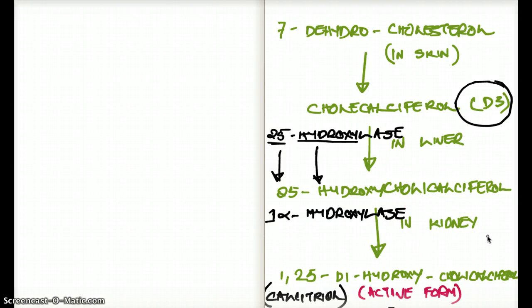25-hydroxycholecalciferol then travels from the liver all the way to the kidney. In the kidney, there is an enzyme called 1-alpha-hydroxylase, which is going to convert our 25-hydroxycholecalciferol to 1,25-dihydroxycholecalciferol. 1,25-dihydroxycholecalciferol is also called calcitriol. That is the active form of vitamin D. That is the form of vitamin D we need for our bones.